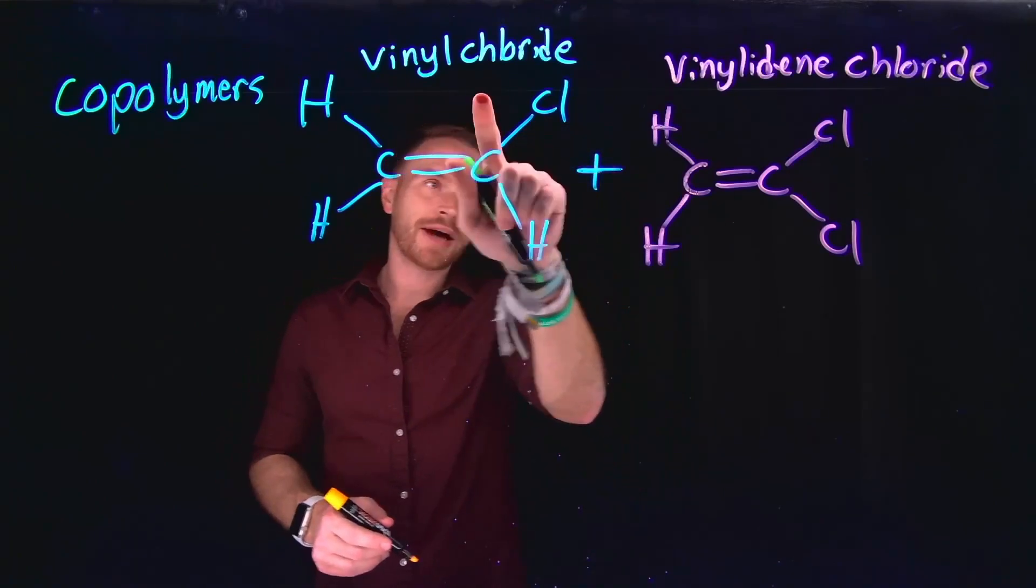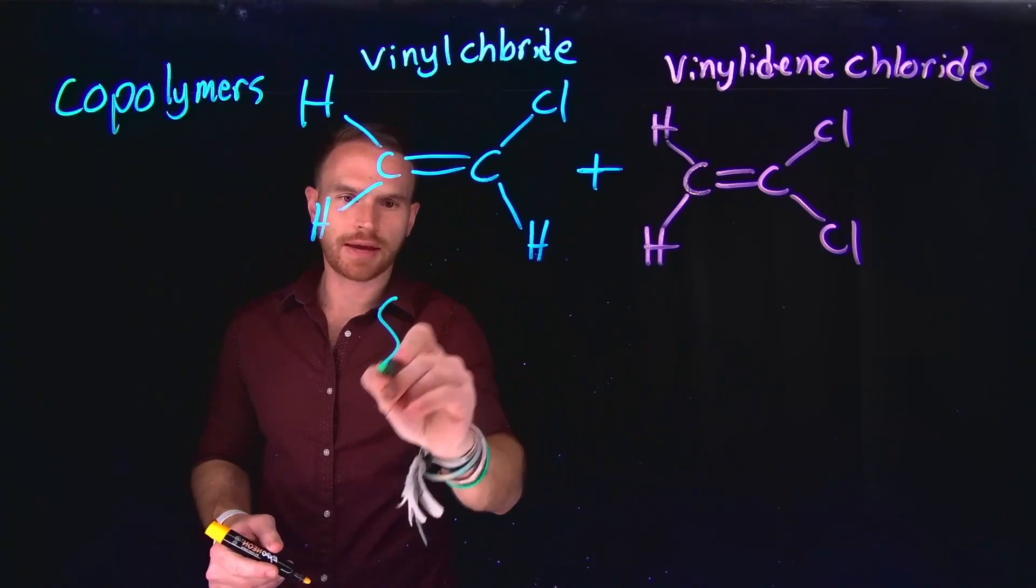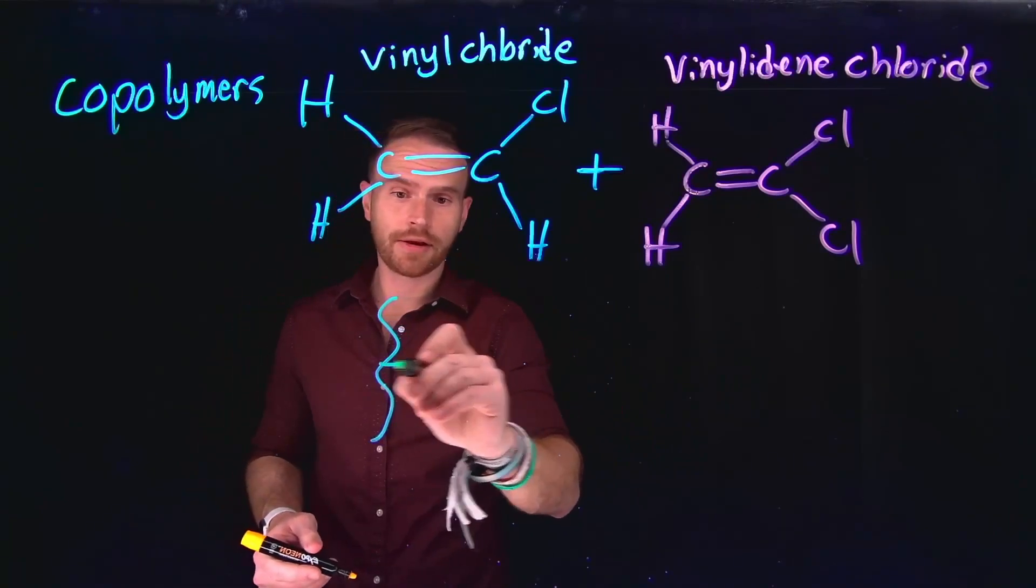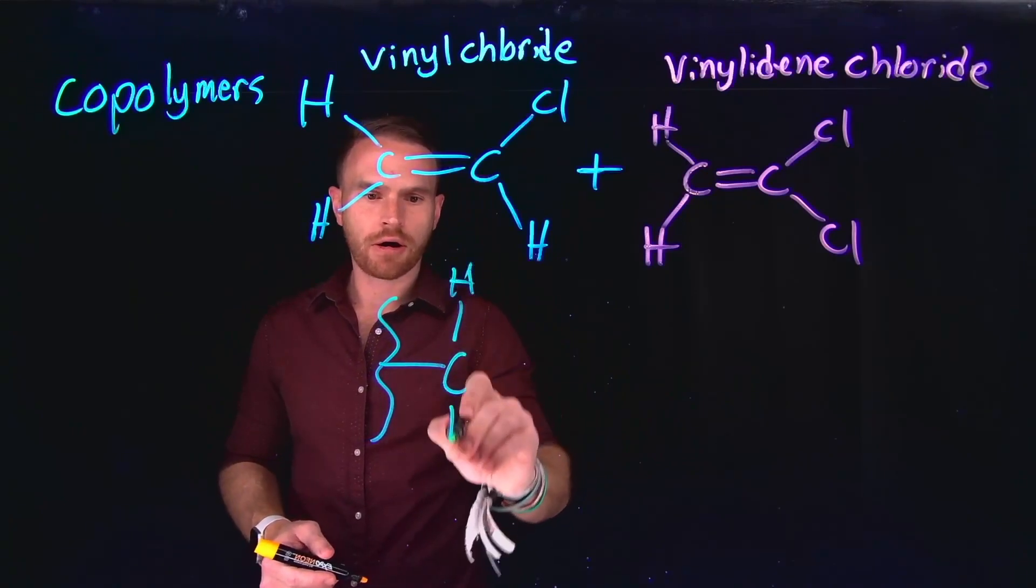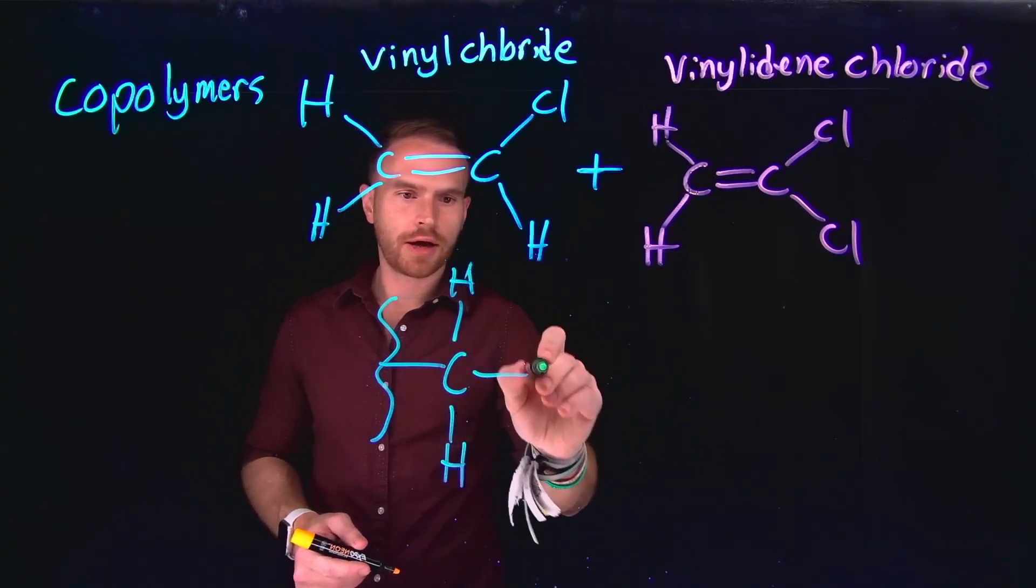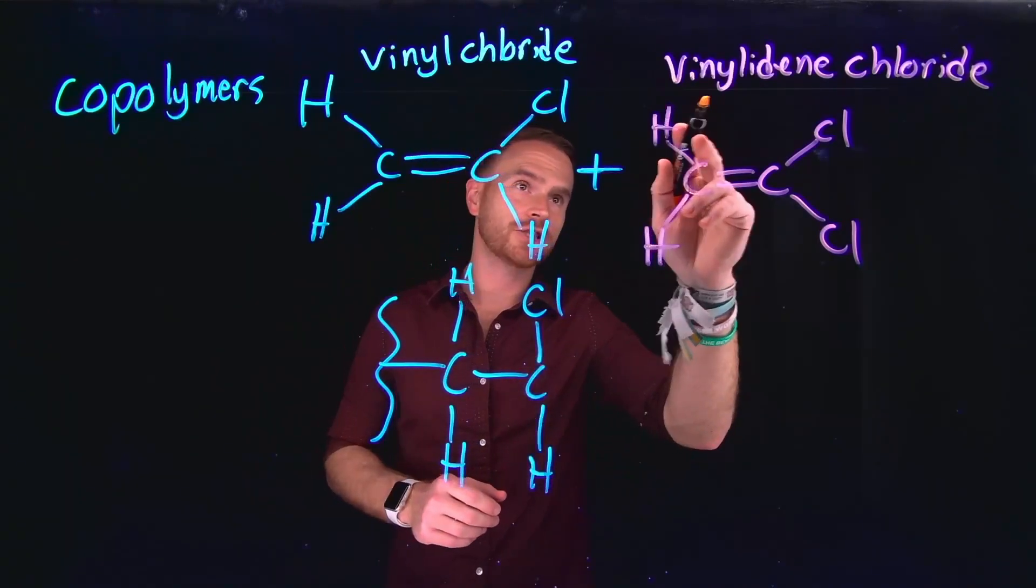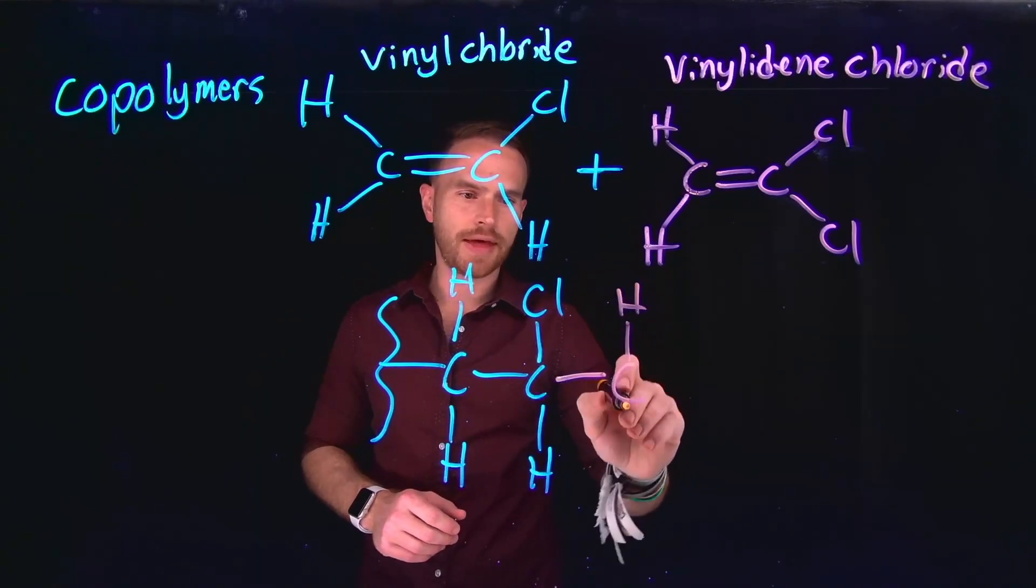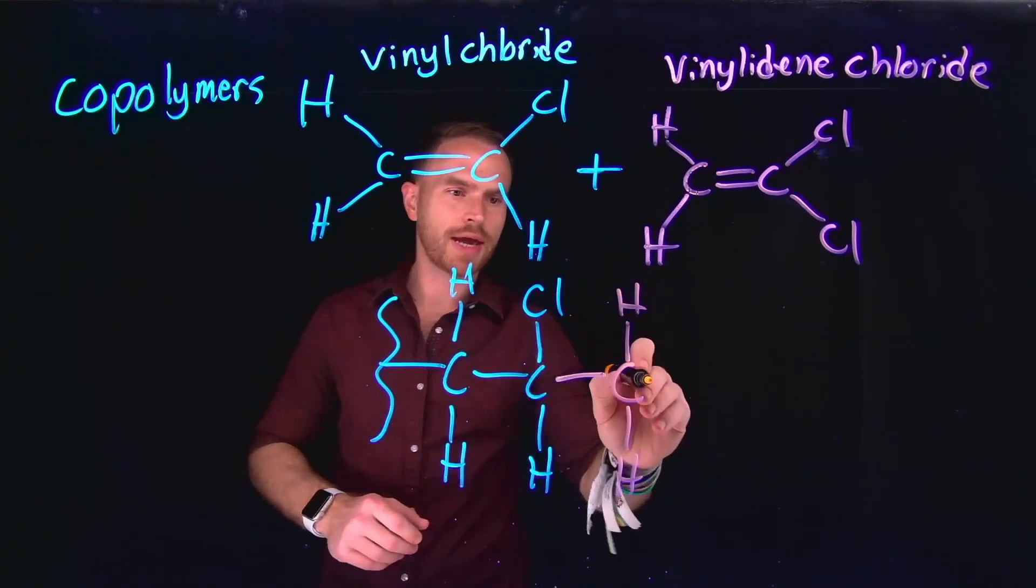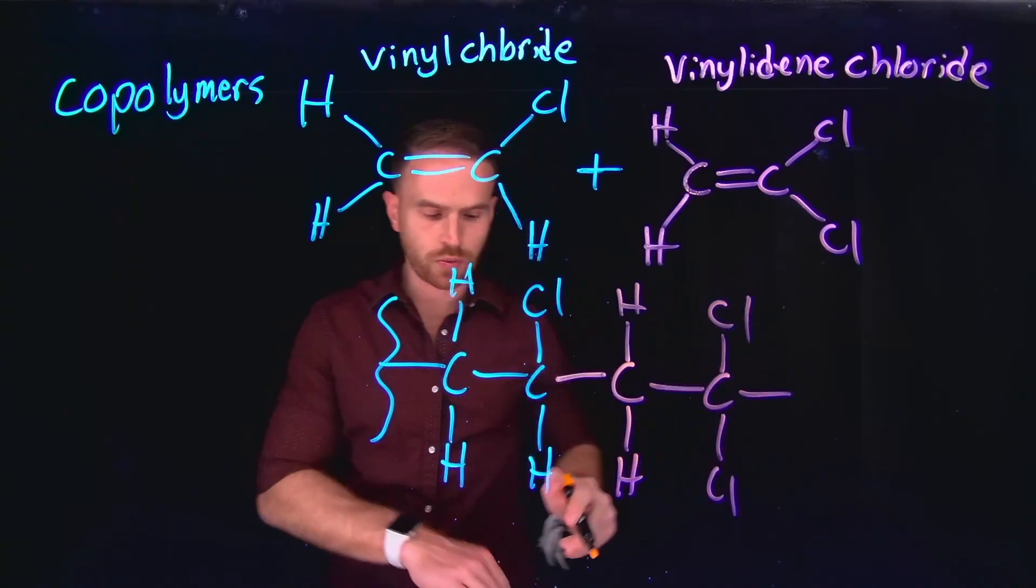In this example, you have vinyl chloride and vinylidene chloride that come together to create a polymer called saran. So in this example, we have our vinyl chloride, which only contains a single chlorine atom. It is attached to vinylidene chloride, which has a subtle difference in that the carbon atom on the right-hand side actually contains two chlorine atoms.